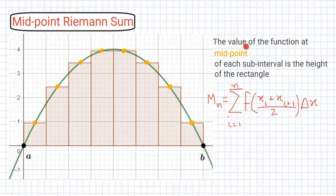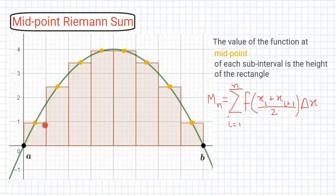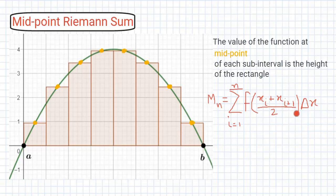Similarly, if the value of the function at the midpoint of each subinterval is the height of the rectangle, then the method is called the Midpoint Riemann sum. For the first subinterval, the midpoint defines the function value that gives the height of the rectangle, and the same process goes on for the remaining subintervals. The formula is given by M_n = summation i equal to 1 to n of f((x_i + x_{i+1}) / 2) times delta x.